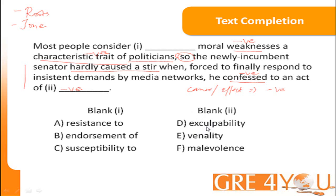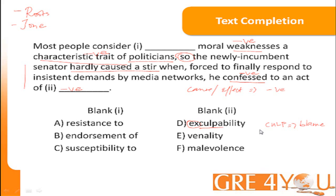Let's examine the words. Here we have a root C-U-L-P, which means blame. This is a fairly complex question, so if you know that the root means blame but you've not seen the word before, you might be tempted to choose it as the answer. But the prefix makes a big difference too. Exculpability — somebody who is exculpable is blameless. The prefix is used to create the opposite.